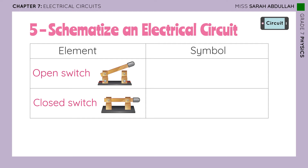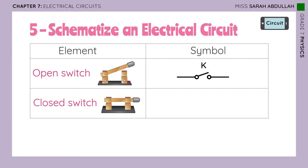For the open switch, it basically looks like this — a switch that is open. For a closed switch, a switch that is closed. We usually call the switch K, which is the letter that refers to the switch. So this is an open switch and this is a closed switch.